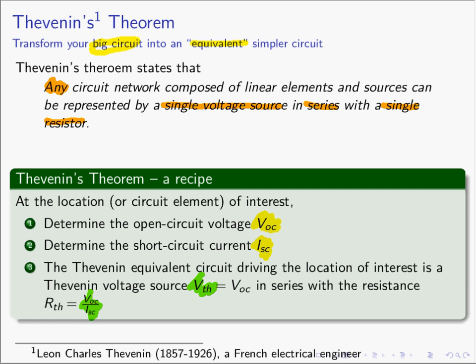The resistor that goes in series is going to be VOC over ISC. So if we take the element of interest, open it, find VOC, then short it out, find ISC, using those two numbers we can get the values for the Thevenin equivalent circuit.